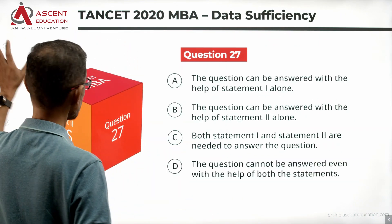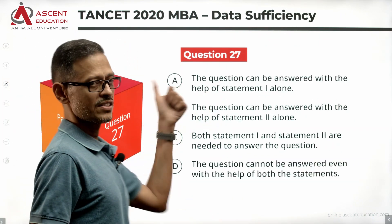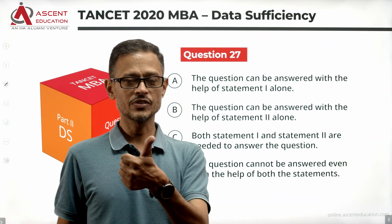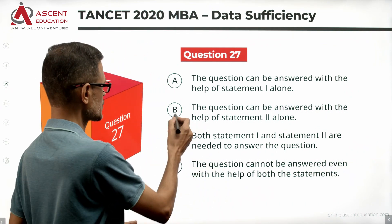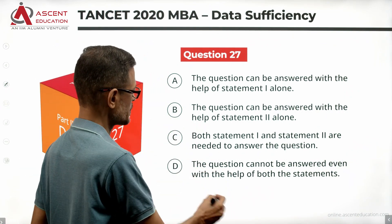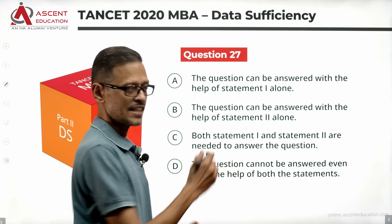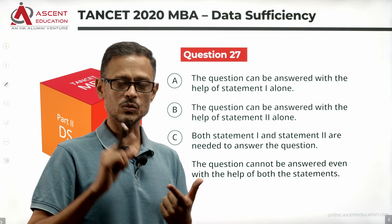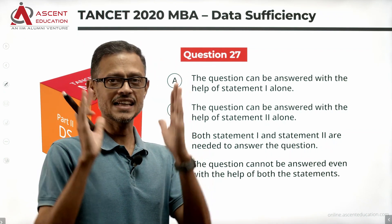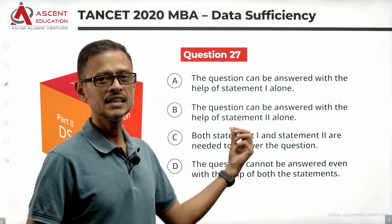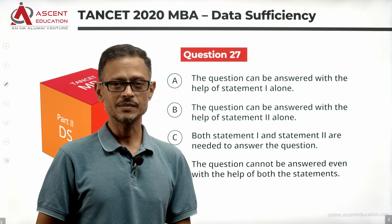The four answer options are: Statement 1 alone is sufficient — answer option A. Statement 2 alone is sufficient — answer option B. Both statements 1 and 2 are needed together — answer option C.